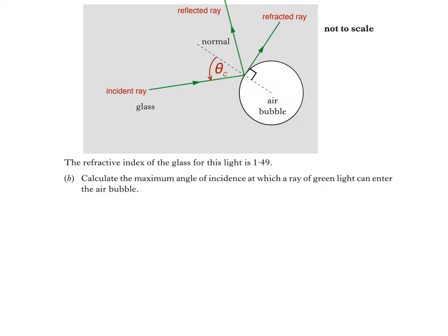To calculate critical angle theta c, we use this equation. Sine theta c is equal to 1 divided by n, where n is refractive index.